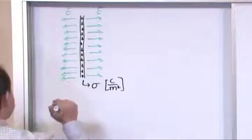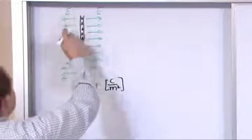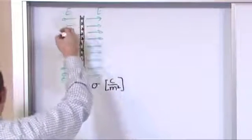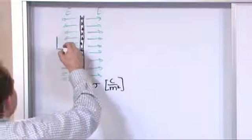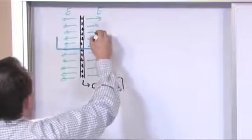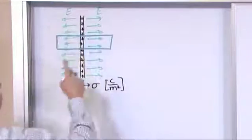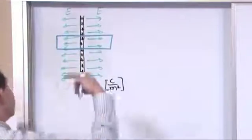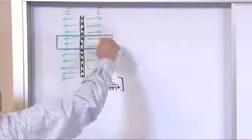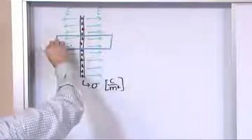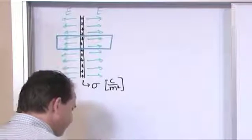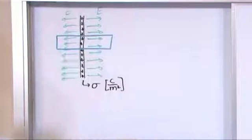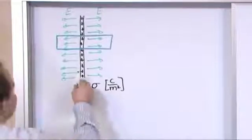So if I want to find the field out here, the best Gaussian surface to use is actually this one: a cylinder that cuts directly perpendicular through. So you have to use your imagination a little bit. It is a cylinder, so it's a tube here, and it's cut, cookie cutter, cut right through there.